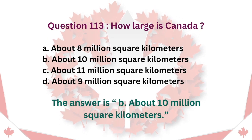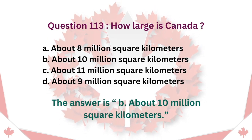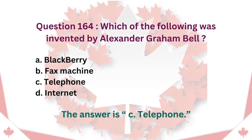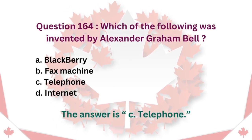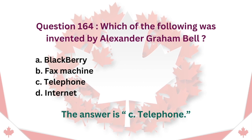Question 113: How large is Canada? About 8 million square kilometers. Question 164: Which of the following was invented by Alexander Graham Bell? A. Blackberry. B. Fax machine. C. Telephone. D. Internet. The answer is C. Telephone.